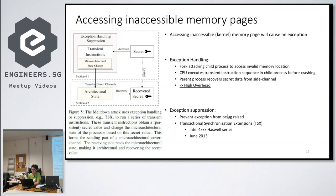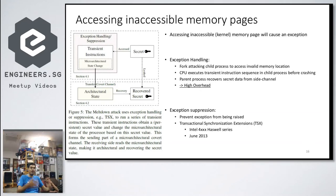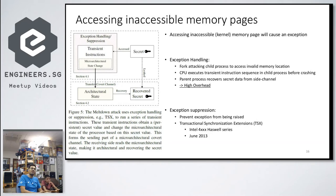There's a high overhead using the fork method — every exception loses a lot of CPU time. Another method uses an instruction called Transactional Synchronization Extension (TSX), which suppresses the exception. The program tries to access kernel memory, which causes an exception, but the kernel memory has already been loaded into cache due to out-of-order execution. As a userland program, trying to access kernel memory raises an exception, but the CPU also goes forward and actually accesses kernel memory, then throws away the register value — but it's still in cache, so you can go back and read it out.